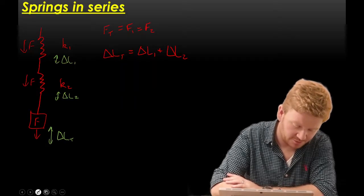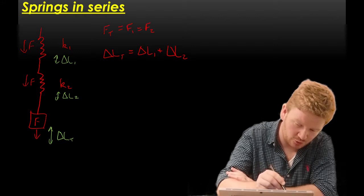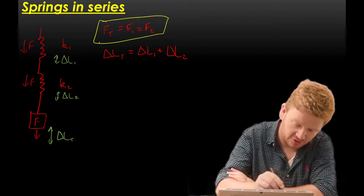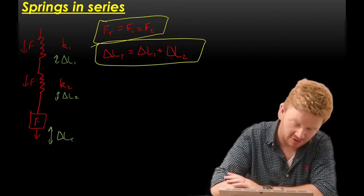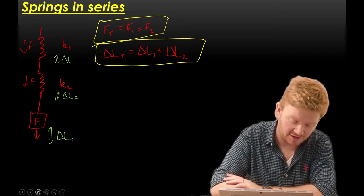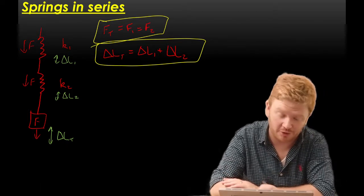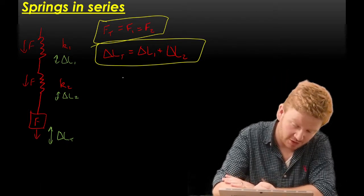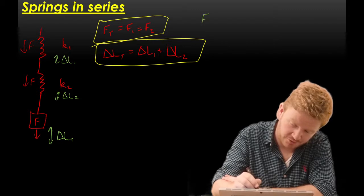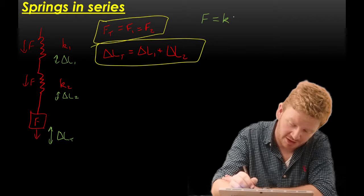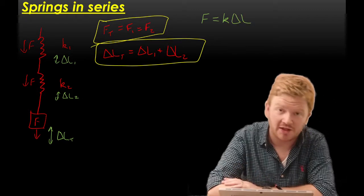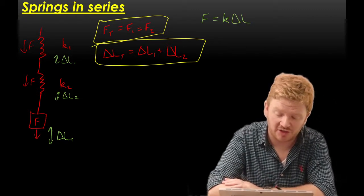So what we have now done is we've given ourselves two key equations. We're saying that the force on each spring is identical, and we're saying that the total extension is made up of the individual extensions of both the springs. Now, my other key thing to remember is Hooke's law. So that is the force on any spring provided it obeys Hooke's law. It's the force constant times extension.